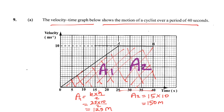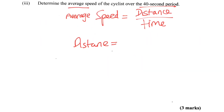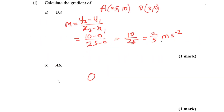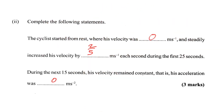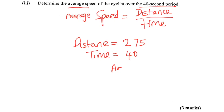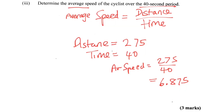So the total area — total distance — is 150 plus 125, which equals 275 meters. The time taken is 40 seconds. So average speed is 275 over 40. Put that in your calculator and you get 6.875 meters per second.